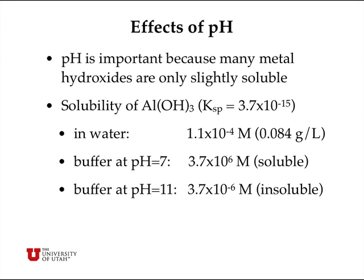If we calculate the expected solubility of aluminum hydroxide under those conditions, maintaining the hydroxide ion concentration at a constant 10 to the minus 7 moles per liter, we predict a solubility of 3.7 times 10 to the sixth moles per liter. That's a ridiculously large number, so what we should recognize is that aluminum hydroxide is simply soluble in a buffer at pH 7 — you'll never actually reach 10 to the sixth moles per liter, as other assumptions break down first.